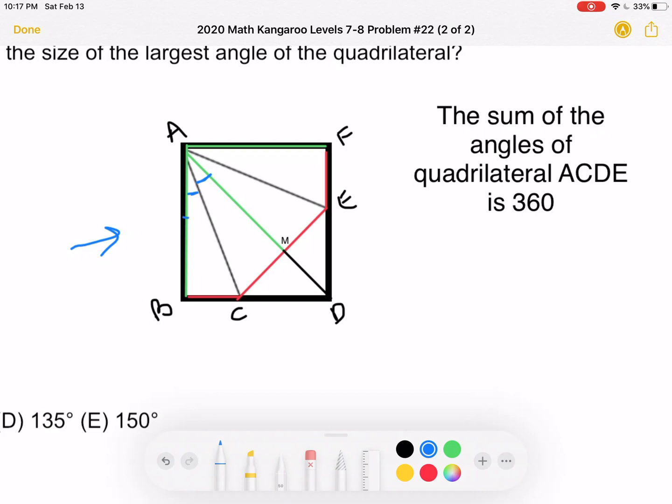And we know that this entire angle must be 45 degrees, because AD is the diagonal of a square. So, if the entire thing is 45, and we have two equal angles that make up that 45 degrees, each one must be half of 45 degrees.